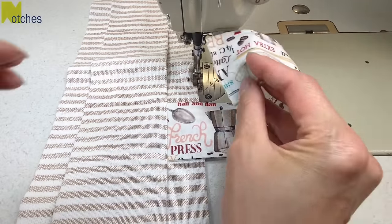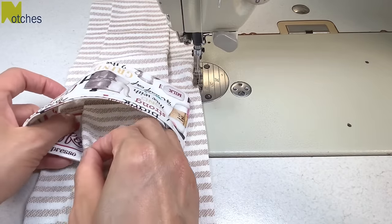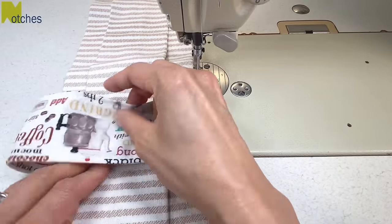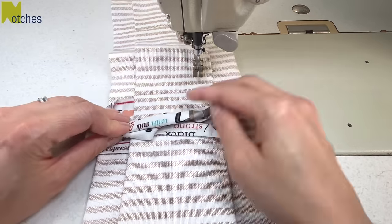Take the other end of the band, fold it over and tuck in the other end on the other side of the pleat. Roll the rest of the band out of your way and edge stitch.